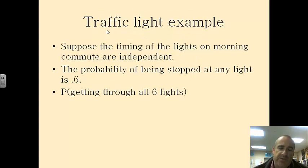So as far as another example, traffic lights. Suppose the timing of the lights on my morning commute, and I have a bunch of lights on my morning commute. But let's suppose that the timing of the lights are independent. The probability of being stopped at a light is 0.6. I want to know what's the probability that I get through all, I'm going to use six of my lights, because if I actually use the 15 lights on my route, the number would be too astronomically big.